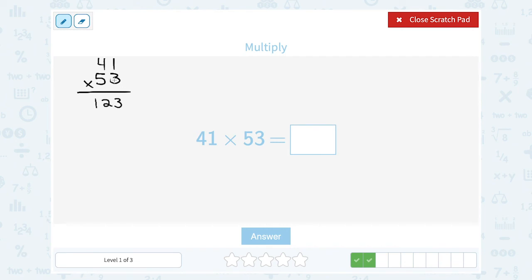I already took care of the 3 that was in the ones place. Now I'm going to look at the 5 that's in the tens place. And remember, I have to put a 0 here because it's in the tens place. So I'm thinking of it as like a 50. So 5 times 1 is 5. 5 times 4 is 20.